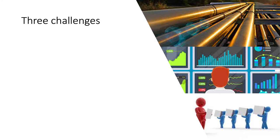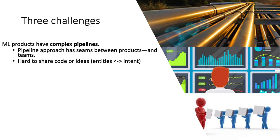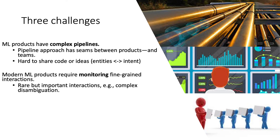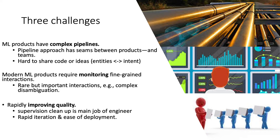There are three challenges we wanted to examine. First, ML products have complex pipelines. Individual models were really good, but there were product seams resulting from teaming behavior — one team would build a killer intent model but wouldn't have access to the latest entity model, and would slowly rebuild that functionality. It was very hard to share code and ideas. Second, ML products differ from typical academic projects: machine learning in production is useful in the tail. If you see the same question every day, just memorize the answer. The challenge is in rare interactions — users expect disambiguation that works in one product to work in every product and for every occupation.